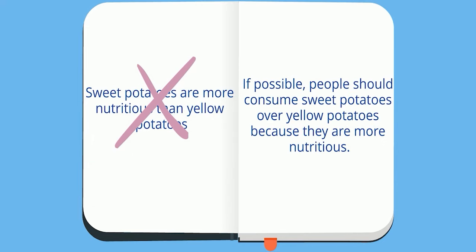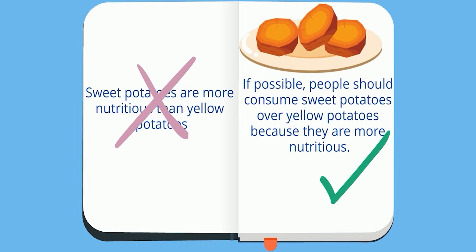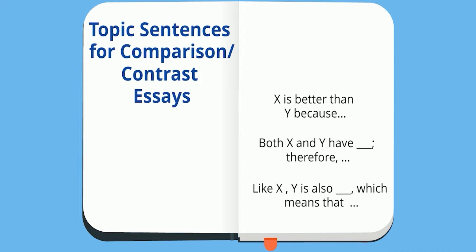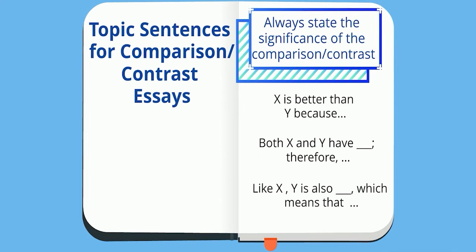For example, instead of saying that sweet potatoes are more nutritious than yellow potatoes, a better topic sentence would state why that contrast is being made. A better topic sentence would be: 'If possible, people should consume sweet potatoes over yellow potatoes because they are more nutritious.' This tells the reader why you're contrasting the two potatoes and what you want them to think or do. Review your topic sentences to see if you answer why by showing what the comparison or contrast reveals and what you want the audience to do with the information.